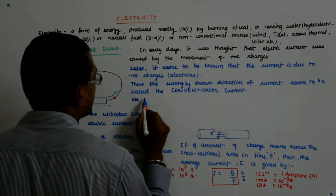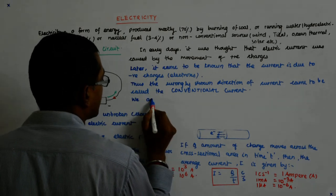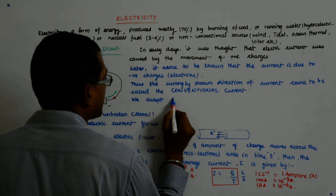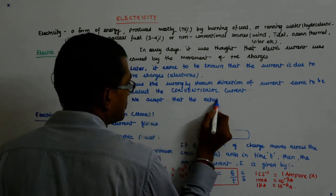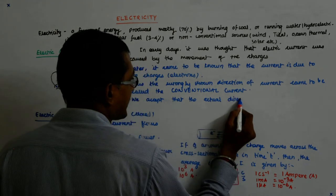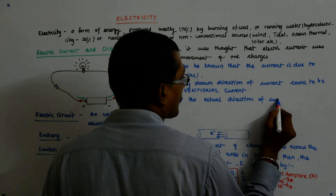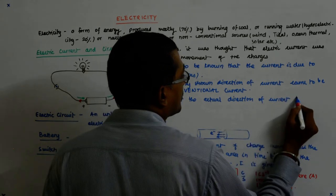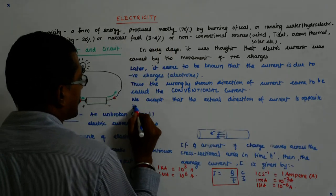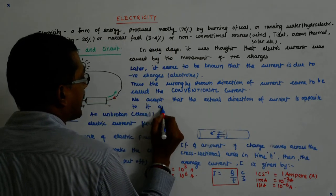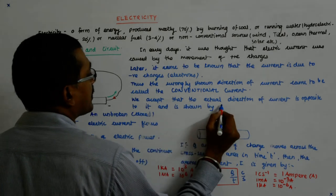We know, we accept, that the actual direction of current is opposite to the conventional direction and is shown by green arrows.